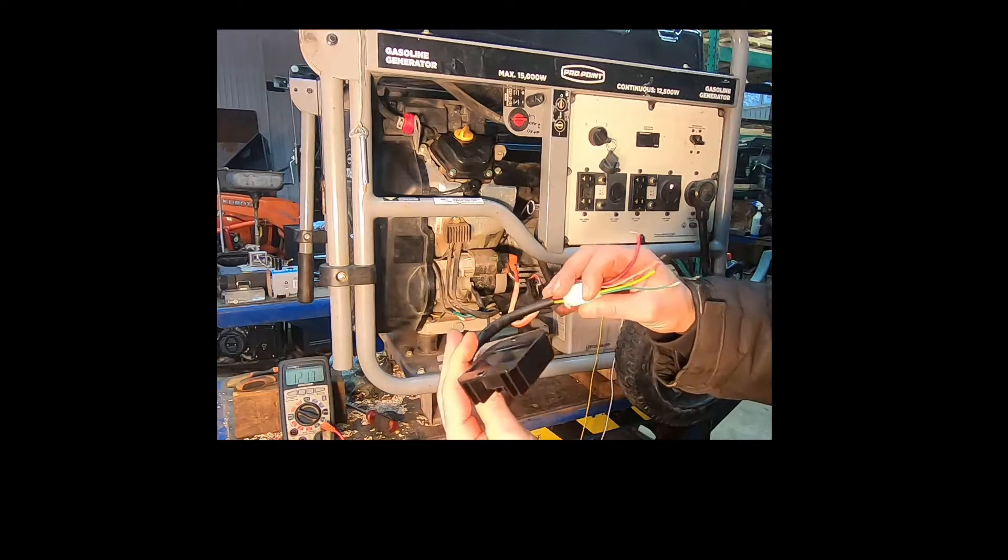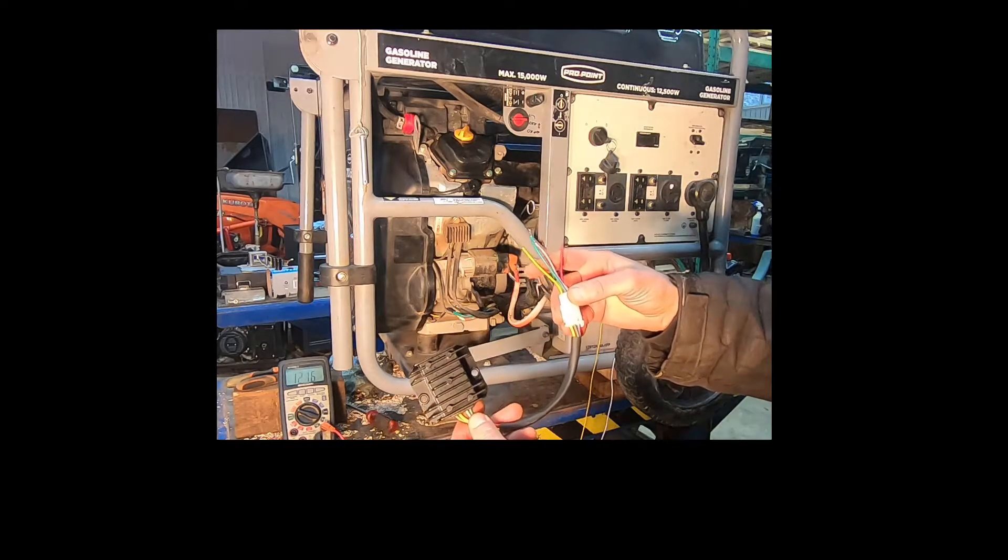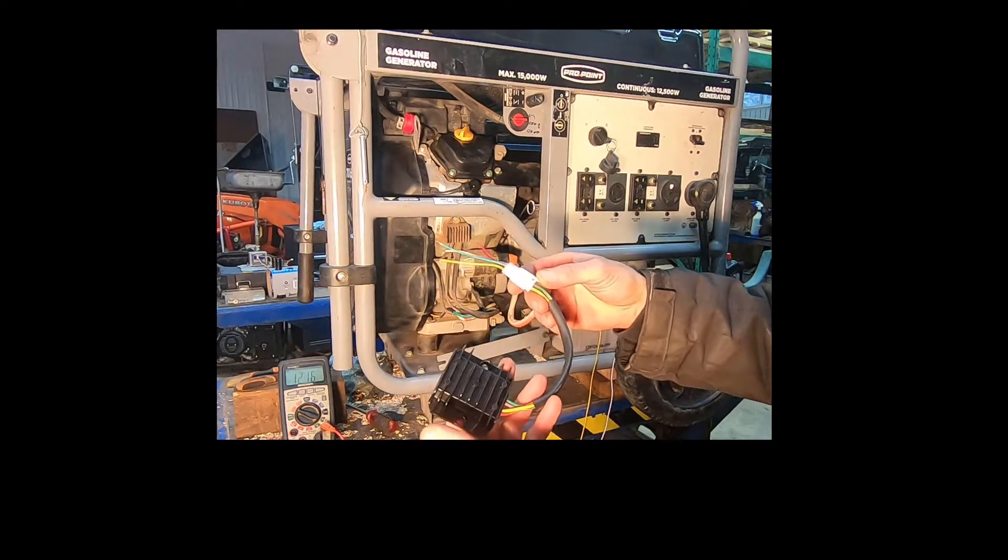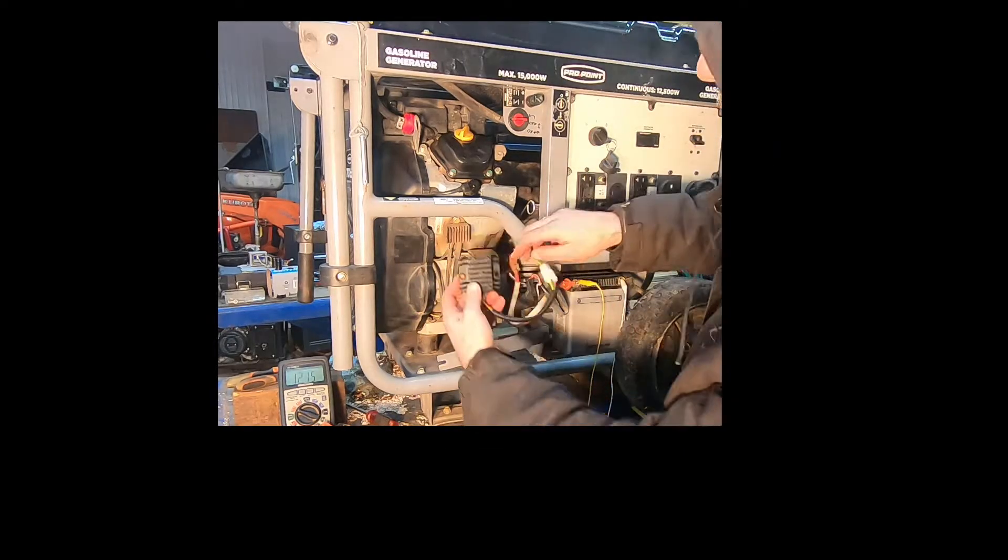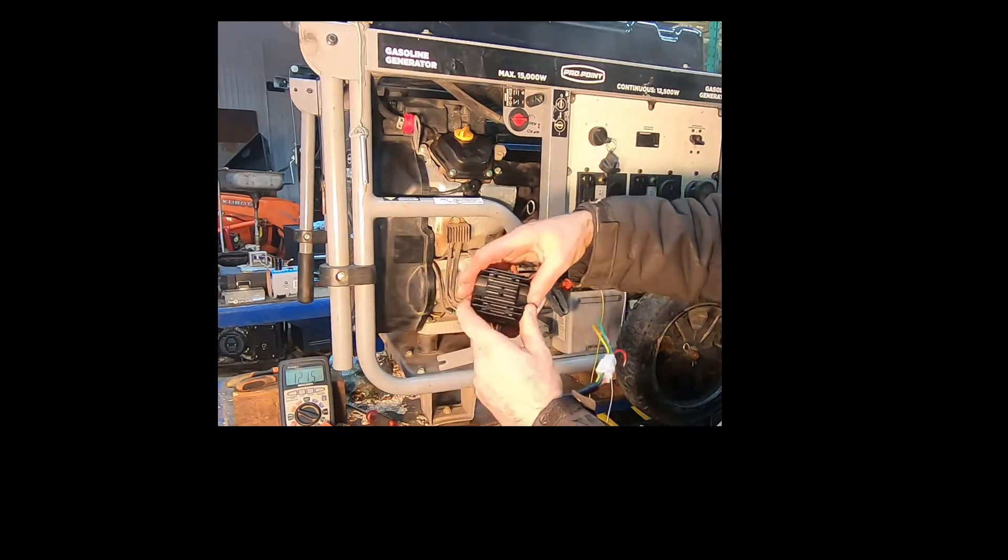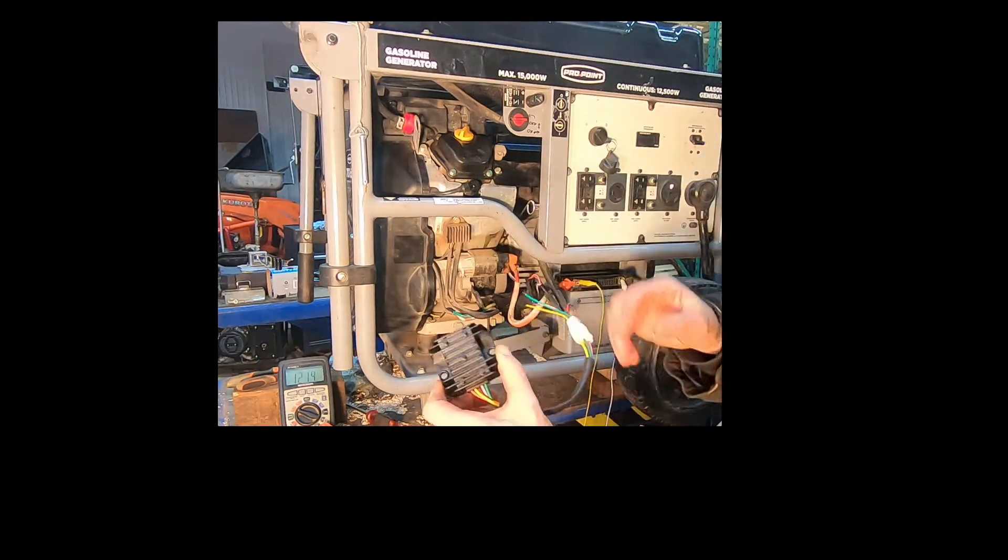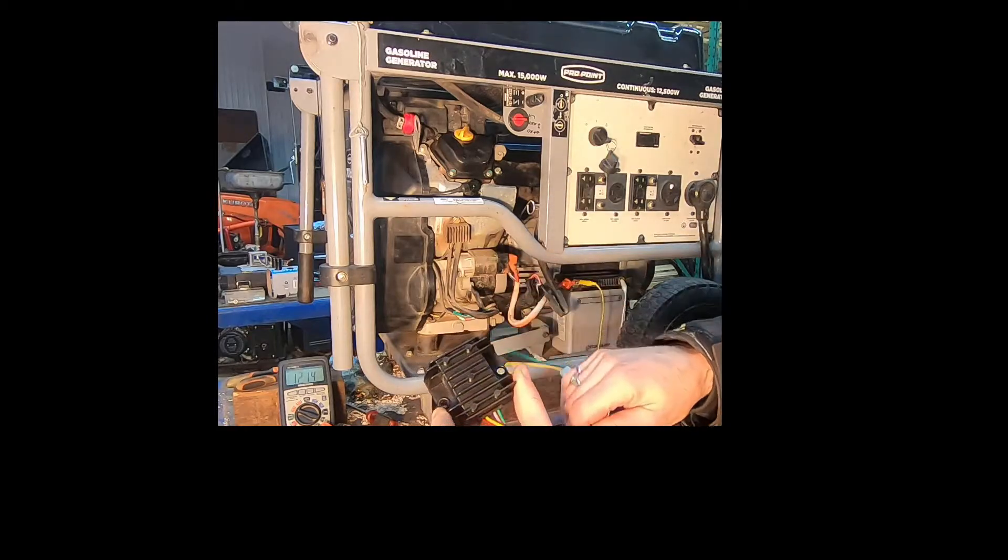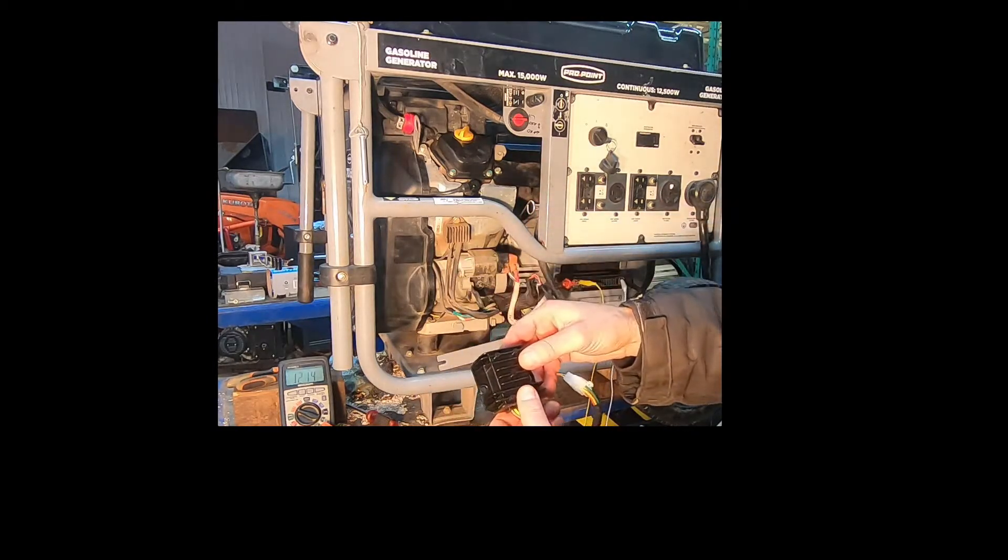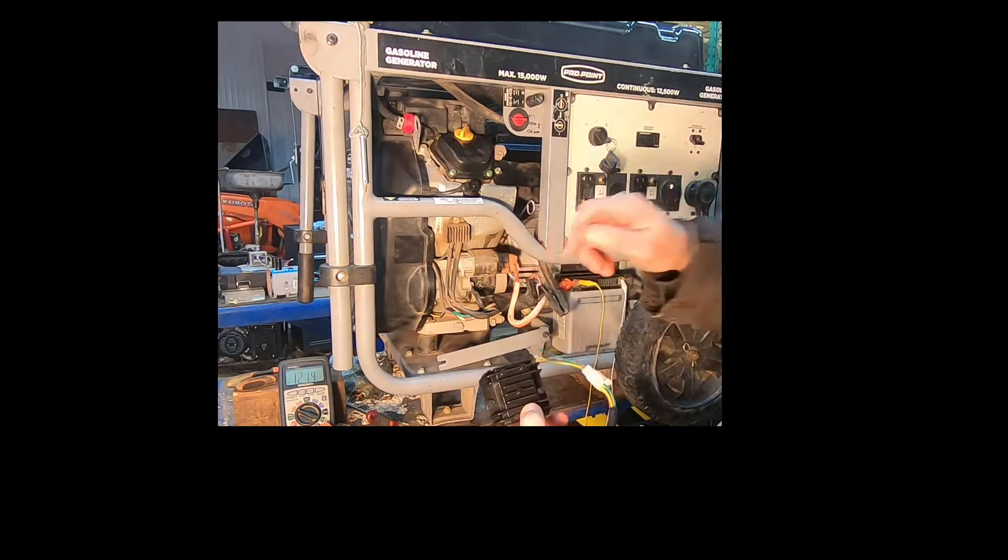Now, this is an aftermarket rectifier regulator built in. It was 20 bucks and free shipping. If you look at the size of this right here versus the size of that, this will have a much greater heat dissipation capability than the original. And that's generally what kills electronics like this, especially in a charging system is overheating. So really, I think this is going to do a great job to resolve the problem.